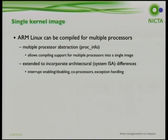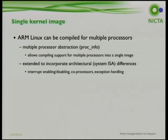We needed to modify Linux to boot on both A9 and M3. The ARM port of Linux has a processor abstraction providing function pointers for all platform-specific operations like caching, TLB management, and CPU-specific functions. This was a good start as it let us compile two sets of functions for different processors into the same Linux binary.